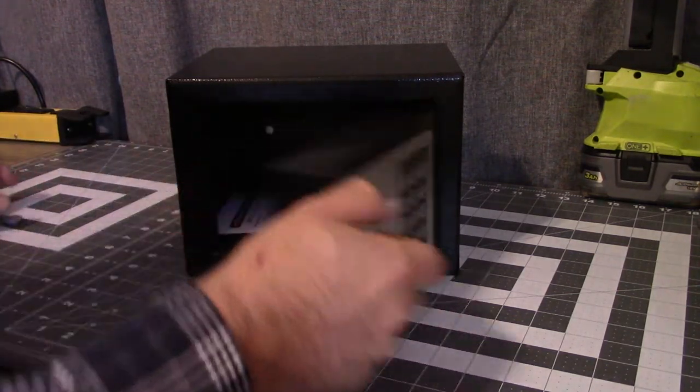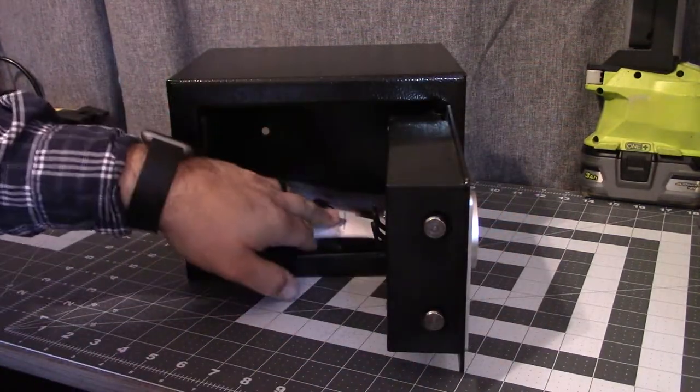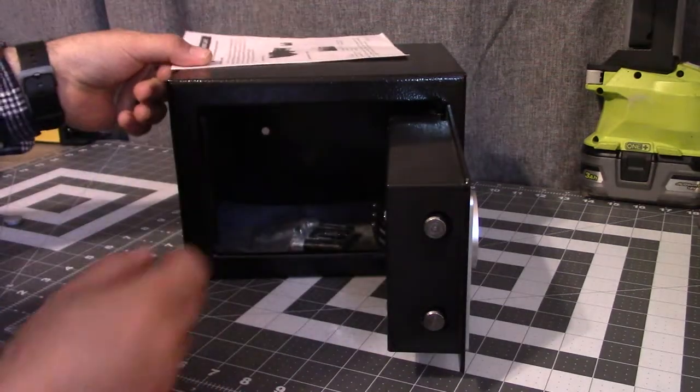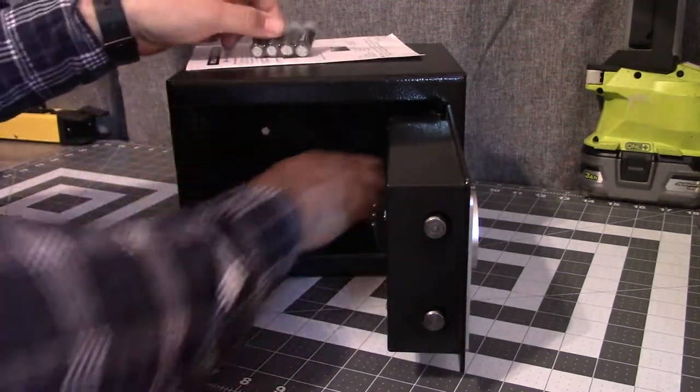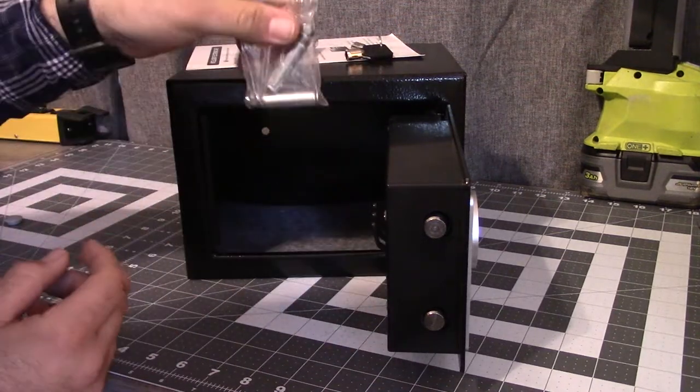Let's take a look inside what comes with it. You can see it's a pretty thick door because it is a digital safe. We have the instruction manuals, we have the batteries, we have the emergency keys, and we actually have concrete anchors.